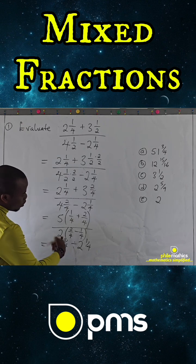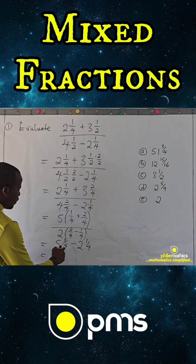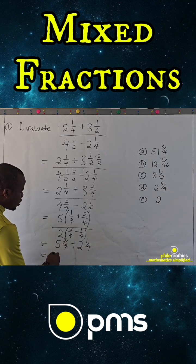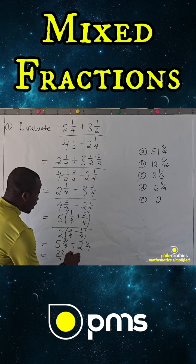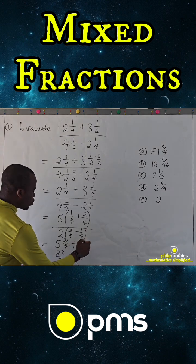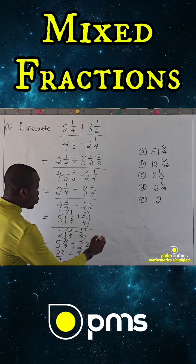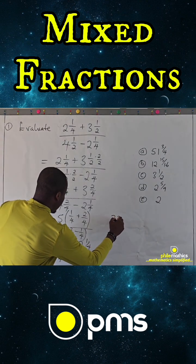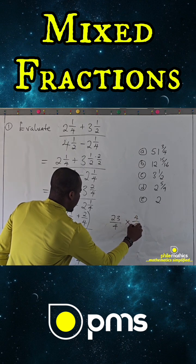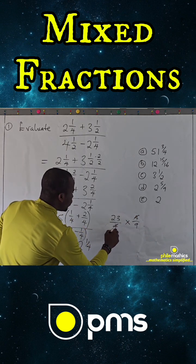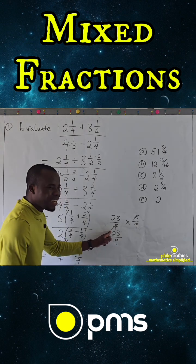Converting to improper fractions: five and three quarters becomes five times four equals twenty, plus three — that's twenty-three over four. Divided by two and one quarter, which is four times two equals eight, plus one — that's nine over four. Changing division to multiplication: twenty-three over four times four over nine. The fours cancel, leaving twenty-three over nine.